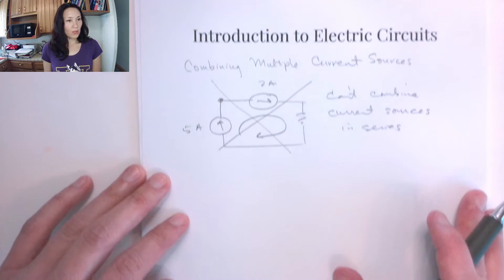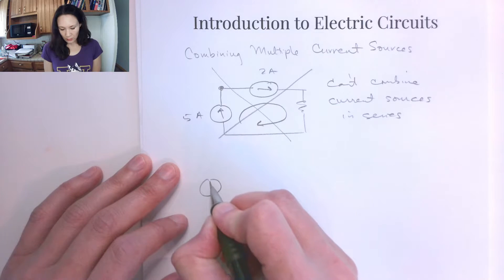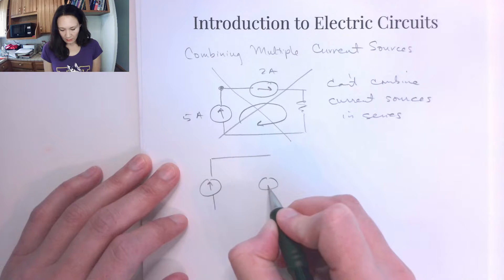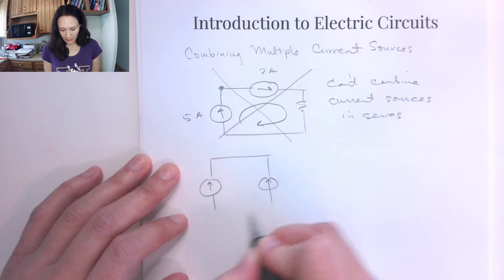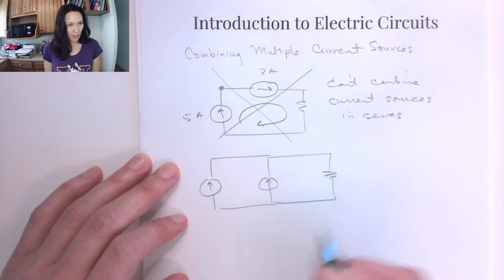But we can combine current sources if they are in parallel. So instead, suppose we have two current sources that are in parallel like this, hooked up to some kind of a load here.